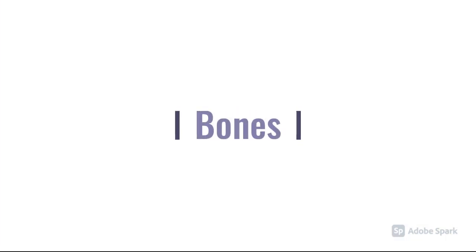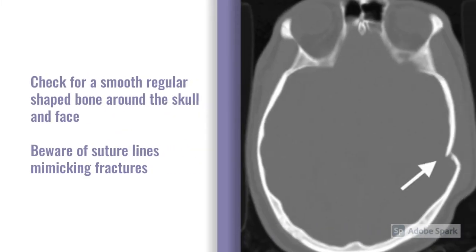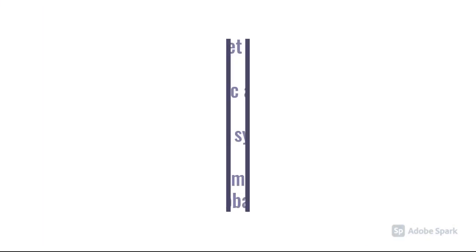Finally, one of the key things to check are the bones, particularly in the context of trauma. You're checking for a smooth, regular-shaped bone around the skull and around the face, looking at the maxilla and around the eyes. Just be aware that sometimes suture lines can mimic fractures.